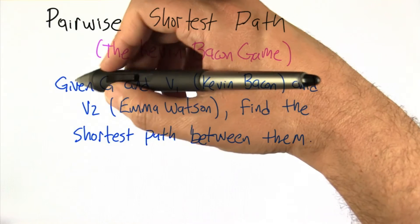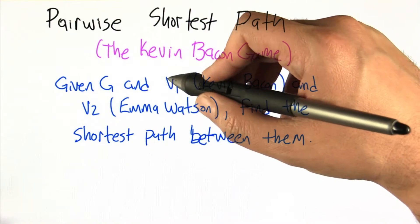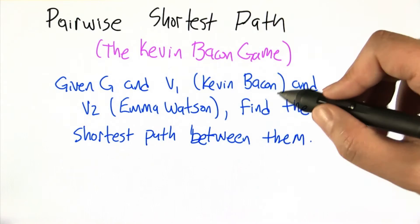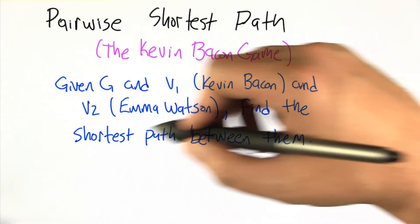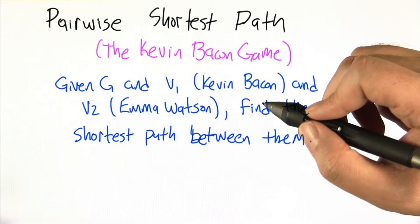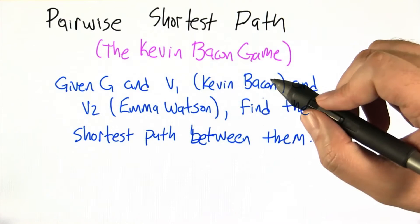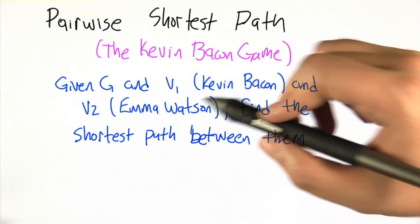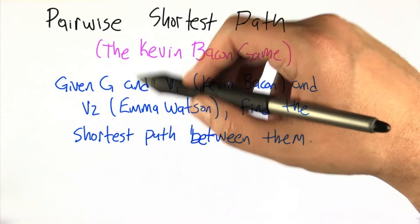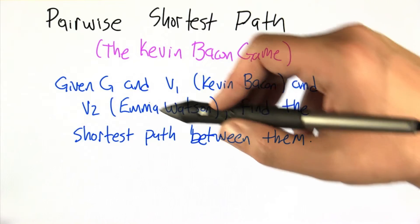Imagine the problem goes like this: I'm going to give you a graph G, and some node in the graph — call it Kevin Bacon — and some other node in the graph, let's say Emma Watson, and we're going to try to find the shortest path between them. In the movie version, the graph consists of actors connected to each other if they were in a movie together.